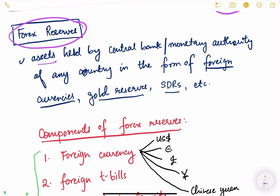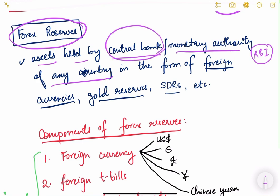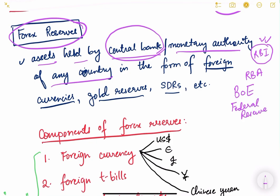Forex reserves are basically the assets held by the central bank or monetary authority of any country. In India, the monetary authority is the Reserve Bank of India. Every country has a monetary authority — in Australia it is the Reserve Bank of Australia, in England it is the Bank of England (BOE), and in the USA it is the Federal Reserve.